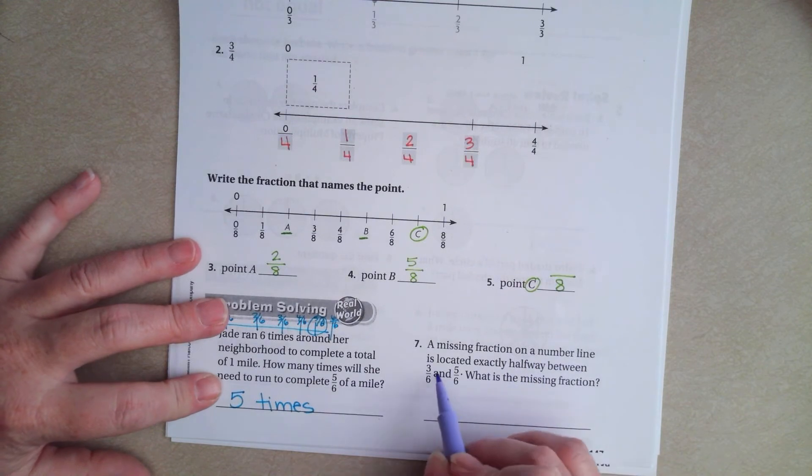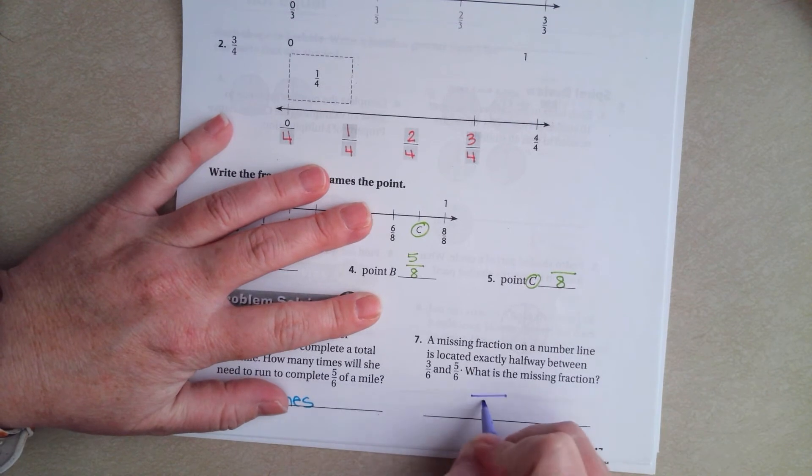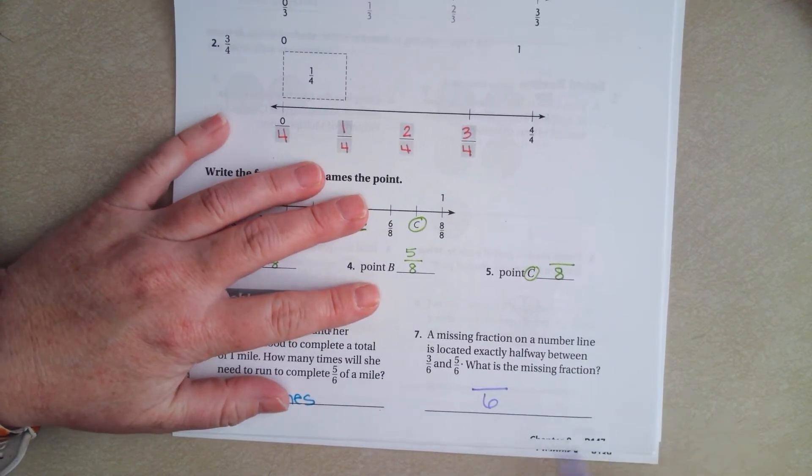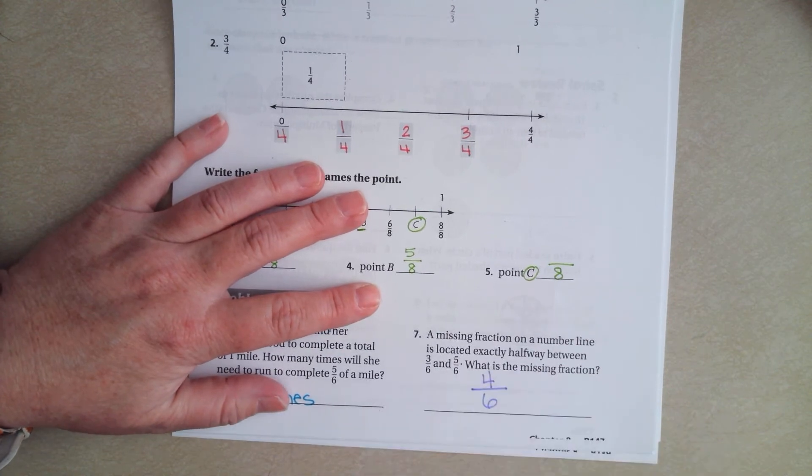A missing fraction on a number line is located exactly halfway between 3/6 and 5/6. Well, we know the denominator is going to stay the same. That doesn't change. What number is in between 3 and 5? 4. Done.